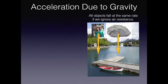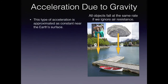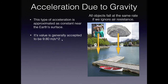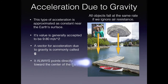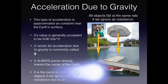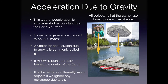All objects fall at the same rate of acceleration if we ignore air resistance. This is something Galileo theorized and he is correct. Near the Earth's surface, we can approximate the value of g as a constant: 9.80 meters per second squared. That's the approximation for acceleration due to gravity near Earth's surface. It will always point directly toward the center of the Earth — if you're not drawing the entire Earth, just point it straight down. That g vector is the same 9.8 m/s² for any size object with any mass.